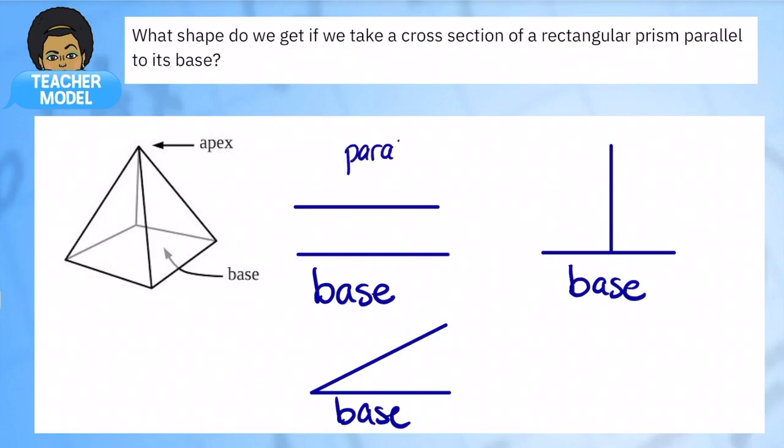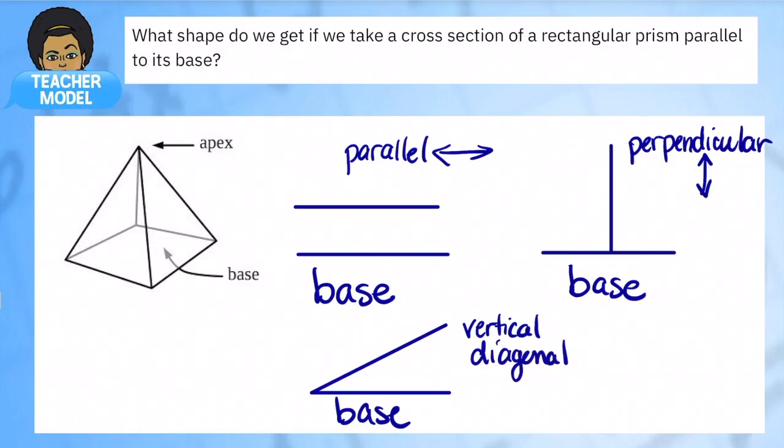So again, we have parallel, which is just left to right straight across to our base, and then we have perpendicular, which is just vertical straight up and down, and then we have a vertical diagonal. With the diagonal, it just has one intersection with the base but it's at an angle, unlike perpendicular where yes it intersects but it makes a perfect right angle. Okay, so what happens with these different kinds of cuts?